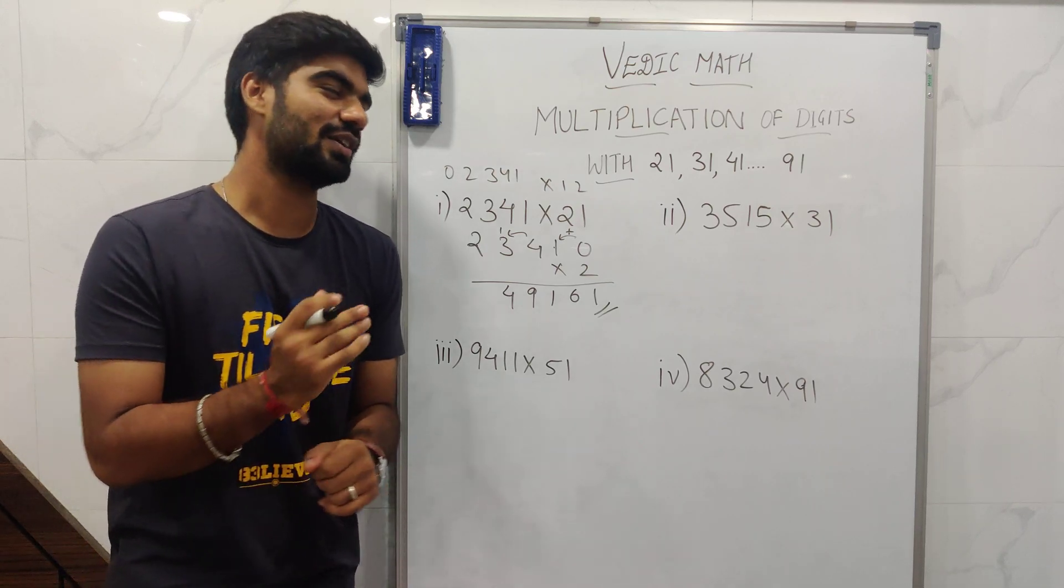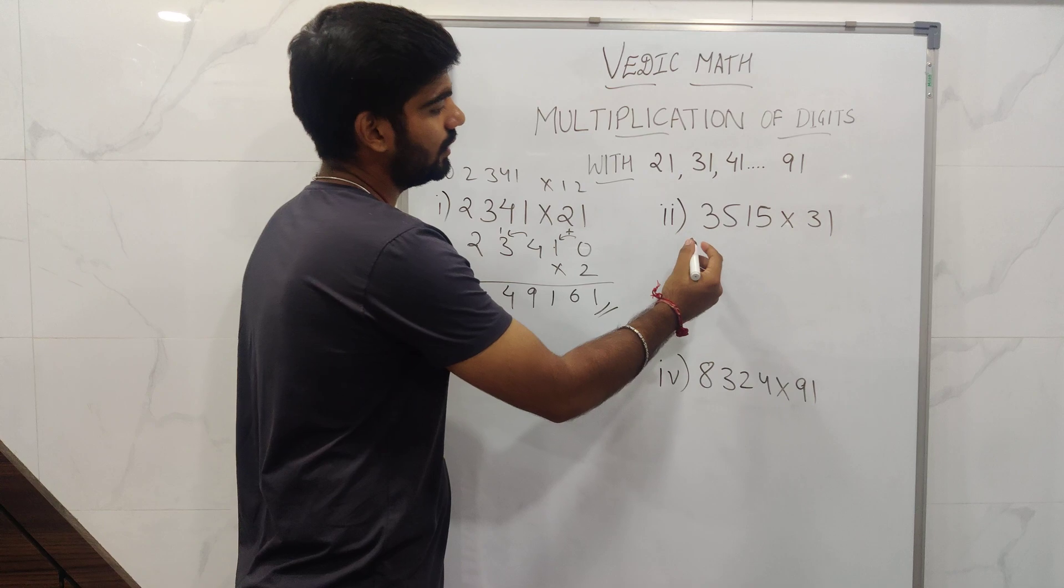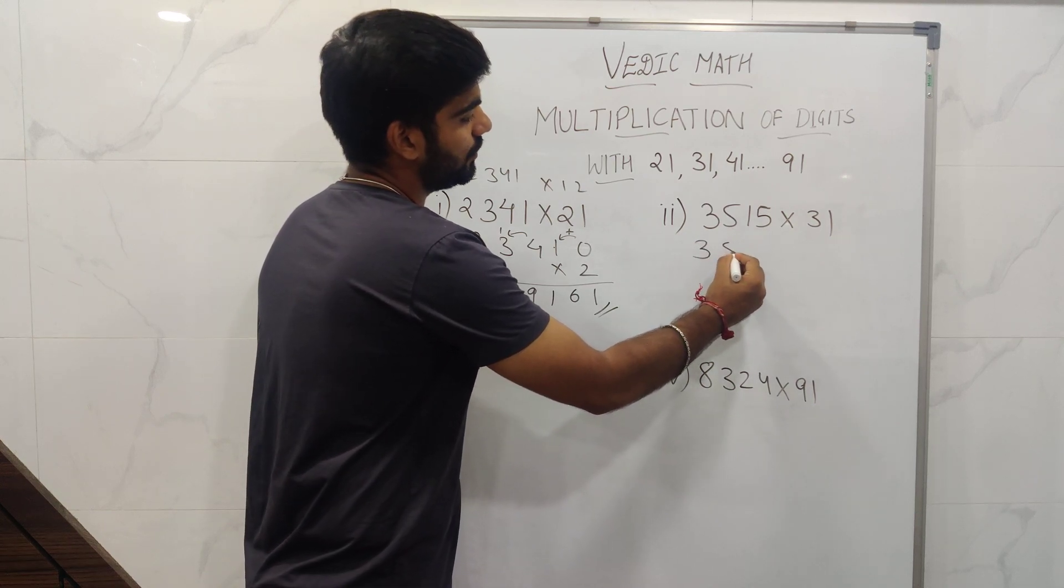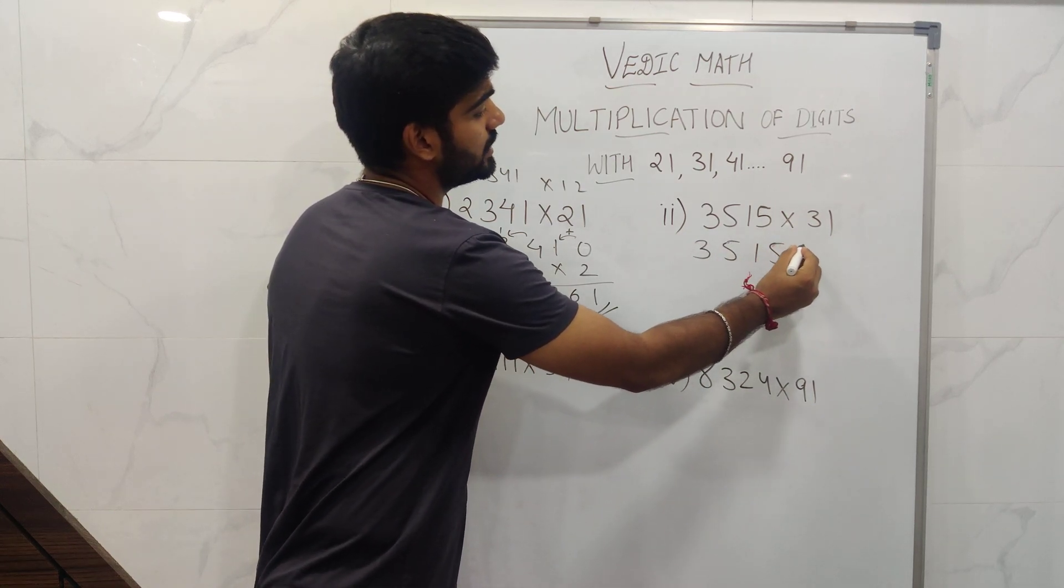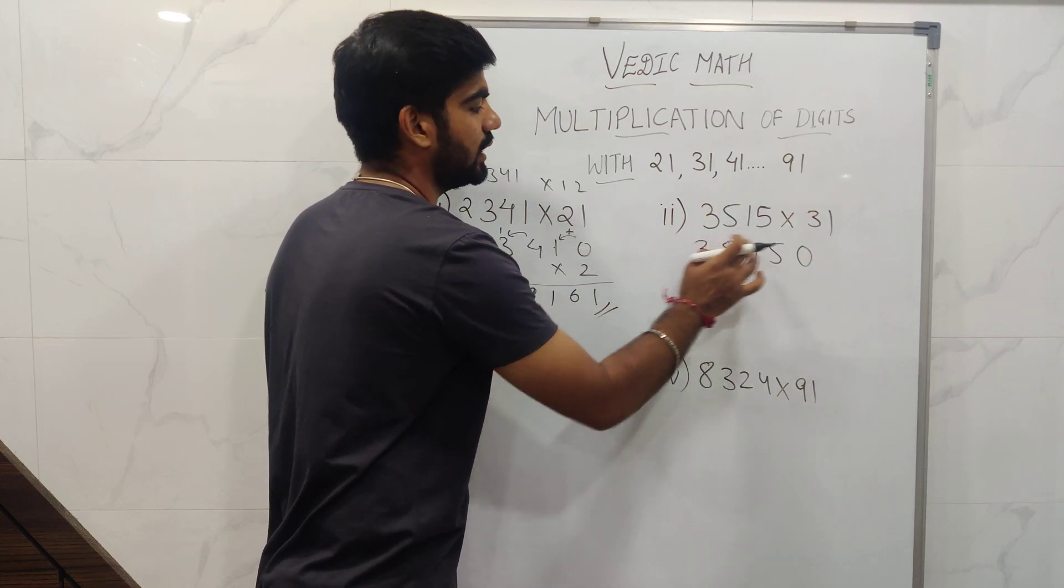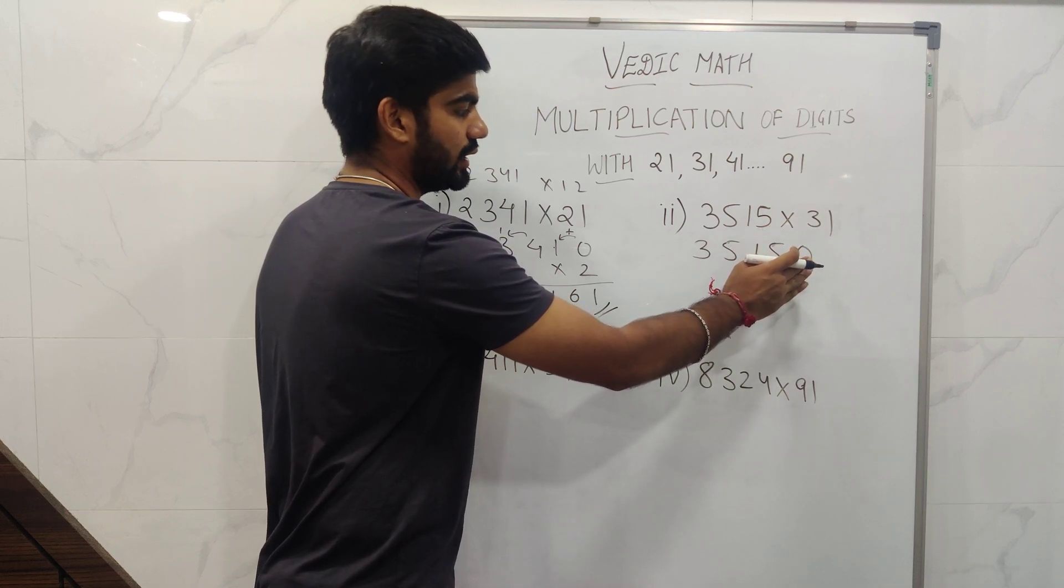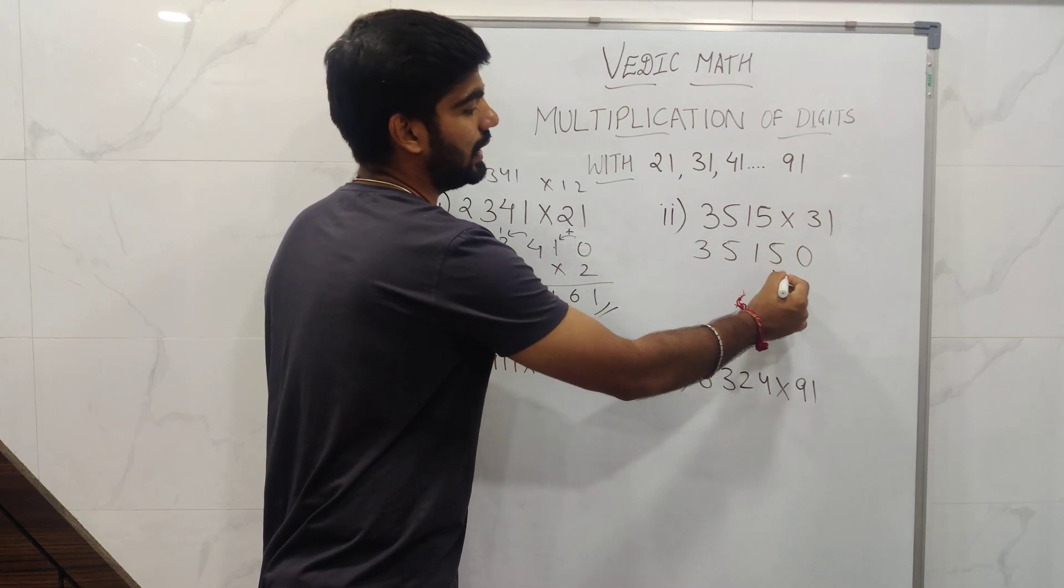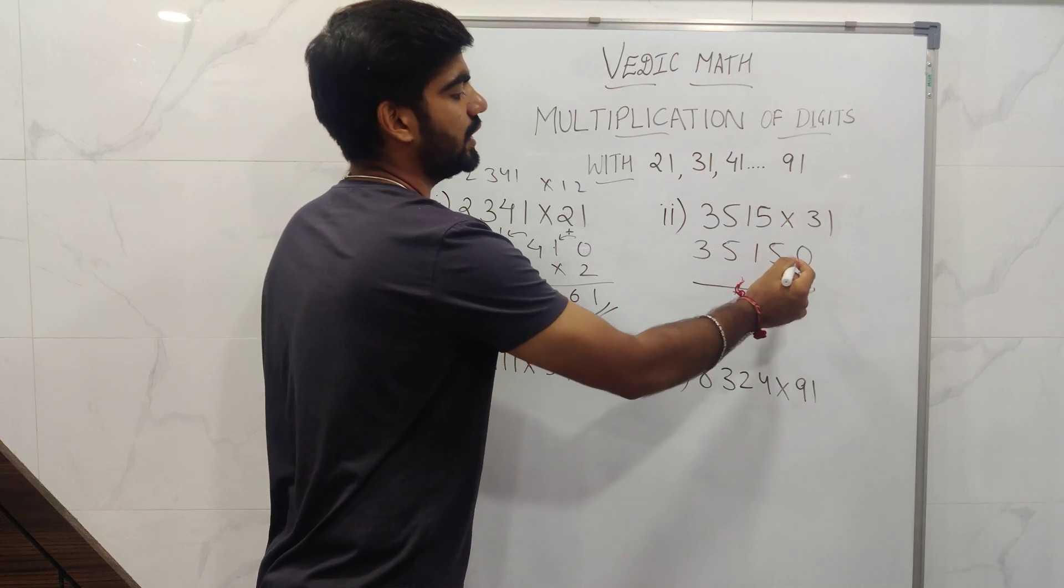Let's solve the next one. 3, 5, 1, 5, 0. Why? The ones place is over here. If it is 31, we need to write 0 over here. Then what we need to do is multiply by 3. So in this step, 3 into 0 is 0, plus 5 which is 5.